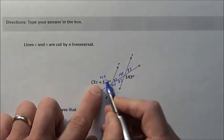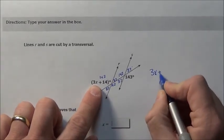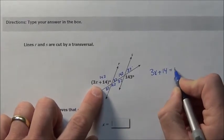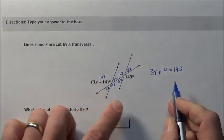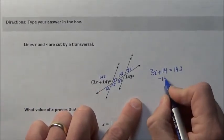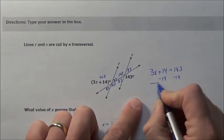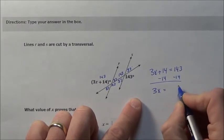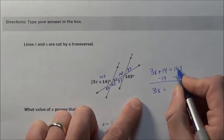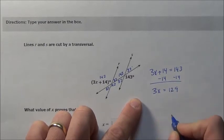So we know 3X plus 14 would have to come out to be 143. So all we have to do is solve this, use our algebra skills. Take away the number, bring it over to the other side, we get 3X is going to have to be, when we subtract that, 4 becomes a 3, looks like 129.